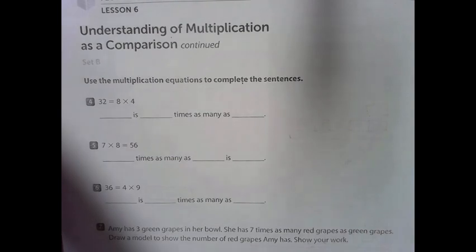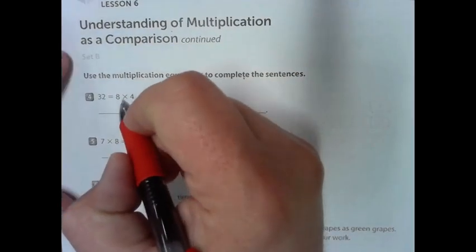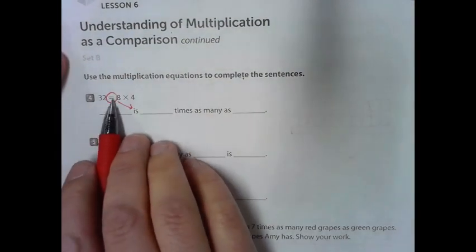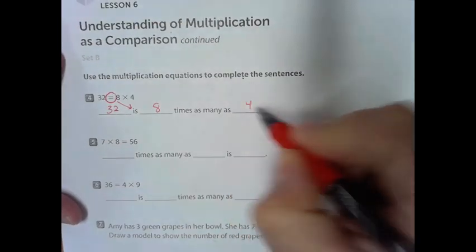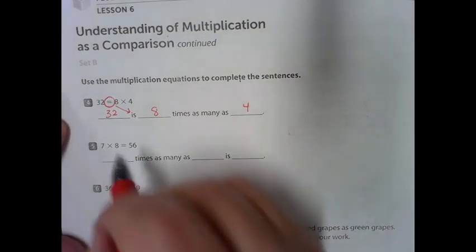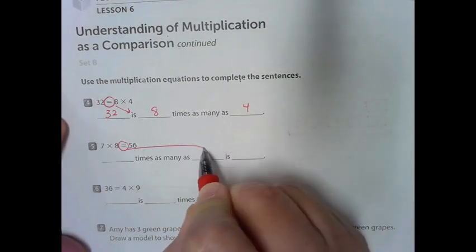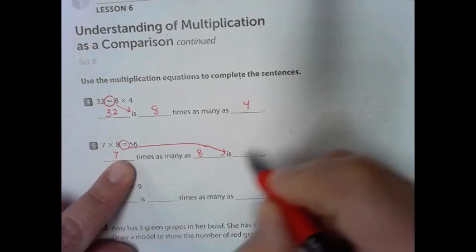We have 32 equals eight times four. Here's a little trick: you can use the word 'is' to replace the equal sign. So you would say: 32 is eight times as many as four. And for seven times eight equals 56 — wherever you see the equal sign, replace it with the word 'is' — so: 56 is seven times as many as eight.